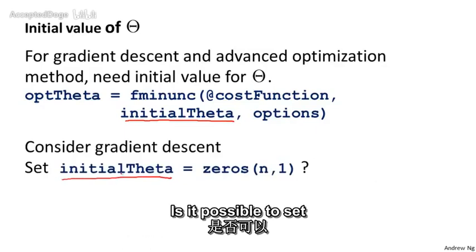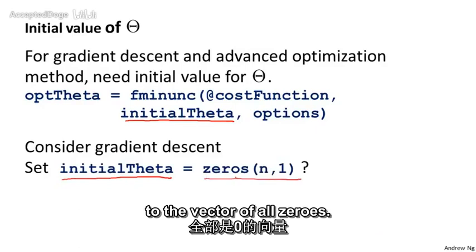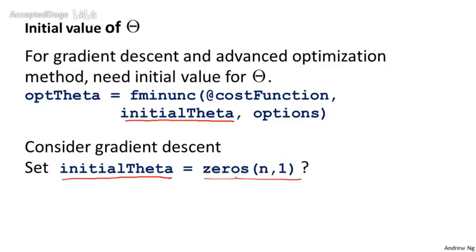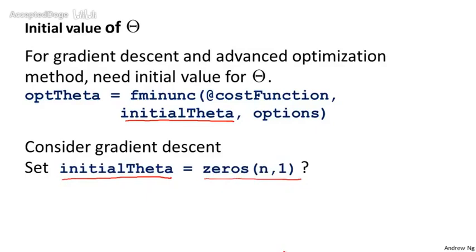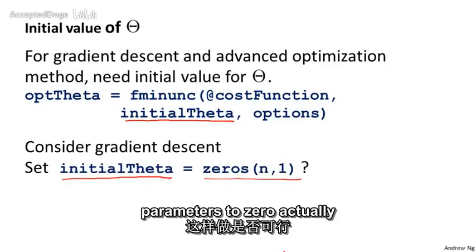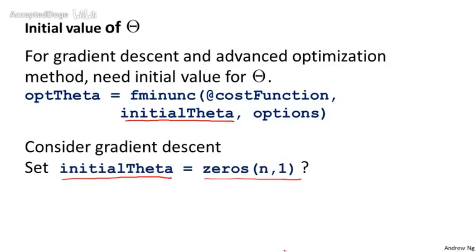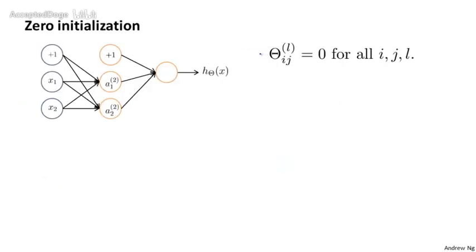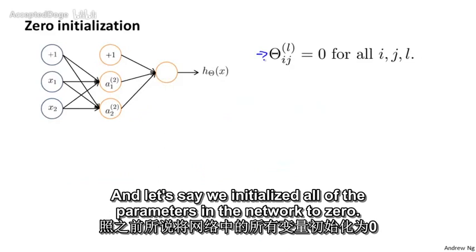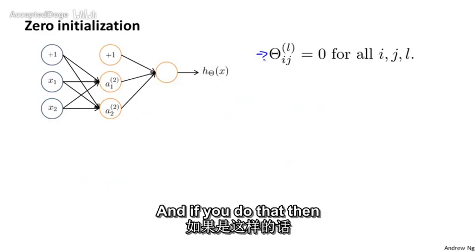Is it possible to set the initial value of theta to the vector of all zeros? Whereas this worked okay when we were using logistic regression, initializing all of your parameters to zero actually does not work when you're training a neural network. Consider training the following neural network, and let's say we initialize all the parameters in the network to zero.